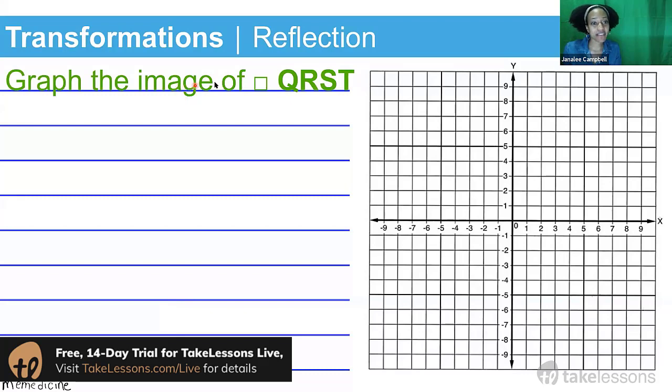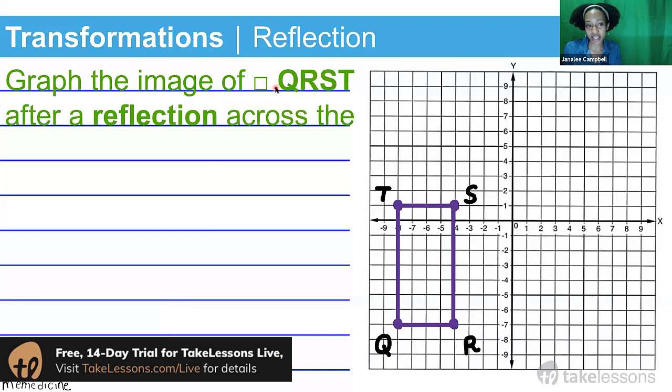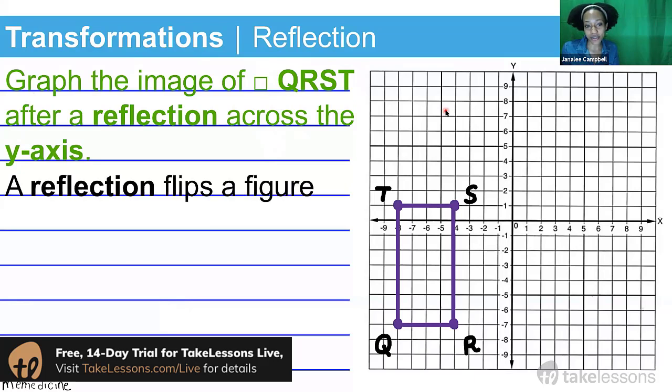So we're going to graph the image. I know this looks like a square, but I'm really denoting a rectangle. We're going to graph the image of rectangle QRST after a reflection across the y-axis.